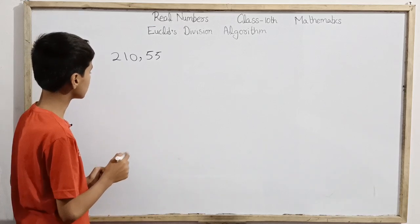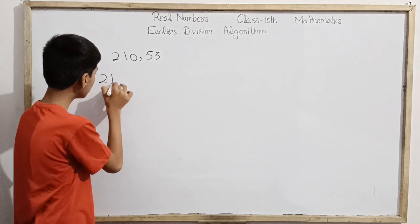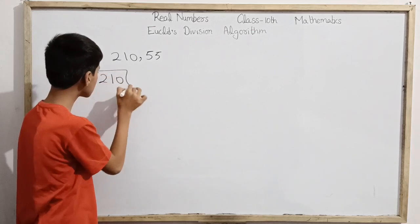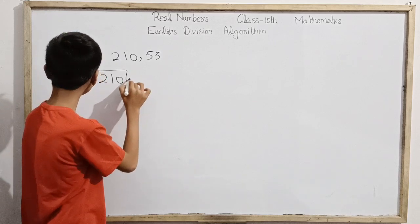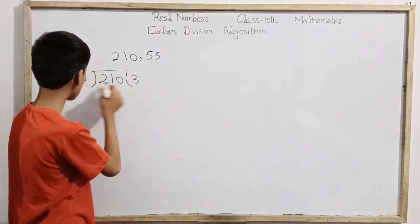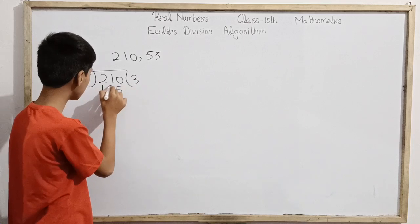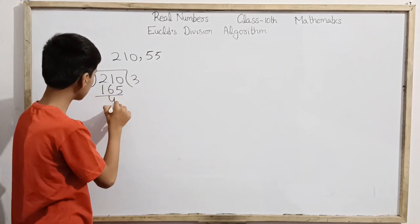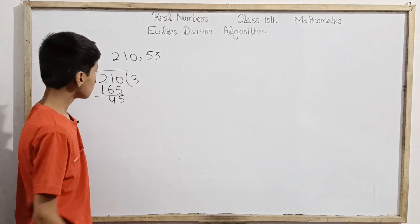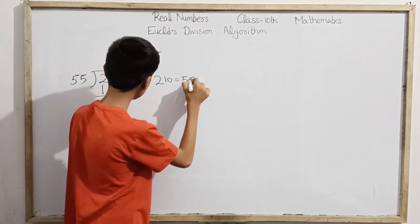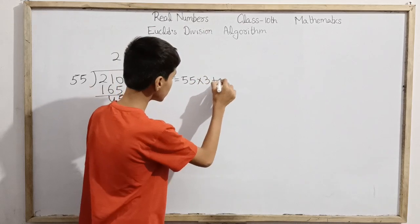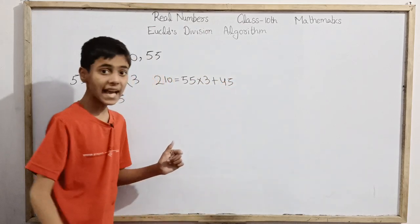If I want the highest common factor, first let's consider a common divisor. I can divide 210 by 55. It goes in 3 times: 3×55=165, and we have 45 remaining. So 210 = 55×3 + 45.